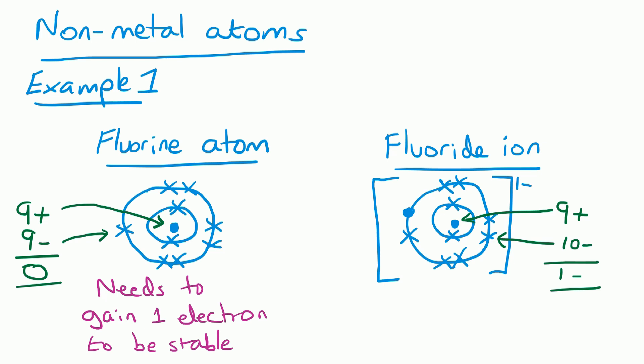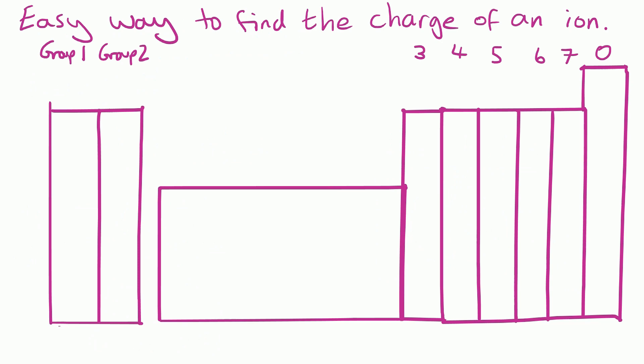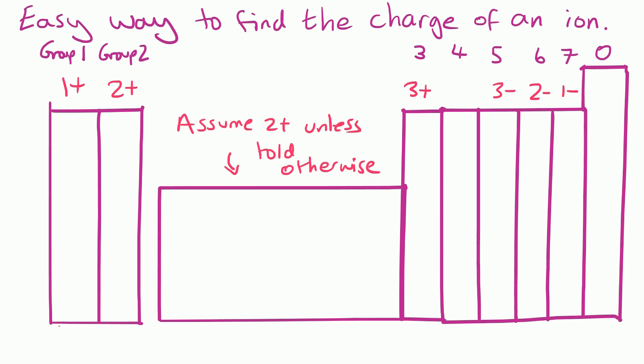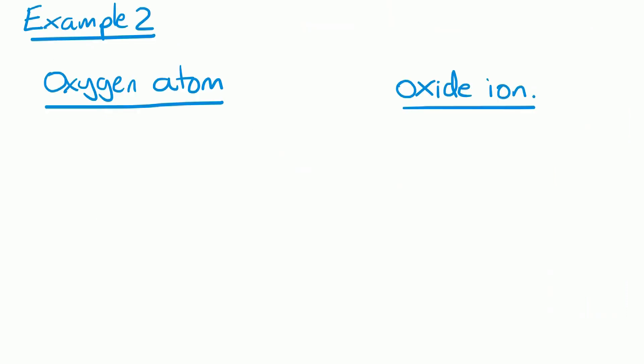Here's an easy way to work out the charge on an ion. As soon as your chemistry exam begins, turn straight to your periodic table and annotate it with ion charges: Group 1 makes 1+ ions, Group 2 makes 2+, Group 3 makes 3+. Group 0 (noble gases) don't react. Group 7 makes 1− ions, Group 6 makes 2−, Group 5 makes 3−. Transition metals are assumed to be 2+ unless told otherwise. So for fluorine in Group 7, the ion is 1−.